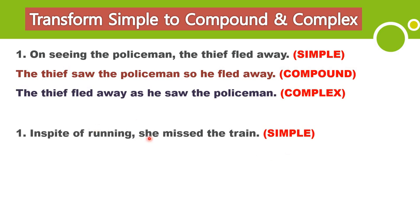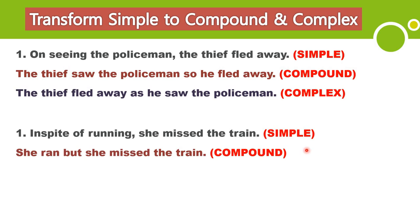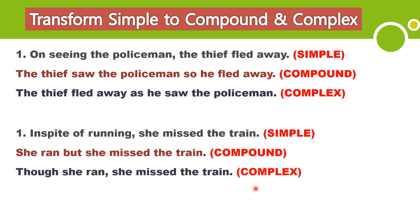Next example. Simple: 'In spite of running, she missed the train.' Compound: 'She ran, but she missed the train' — using the coordinating conjunction 'but.' Complex: 'Though she ran, she missed the train.' Whenever 'in spite of' appears, 'though' or 'although' will come in the complex — this is an adverb clause of concession or contrast.